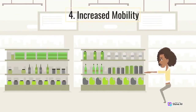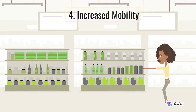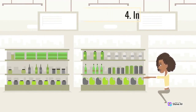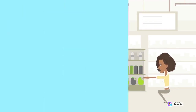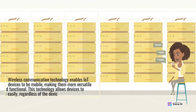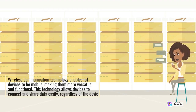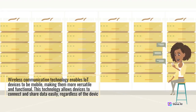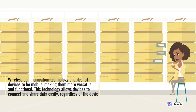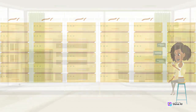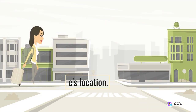4. Increased mobility. Wireless communication technology enables IoT devices to be mobile, making them more versatile and functional. This technology allows devices to connect and share data easily, regardless of the device's location.